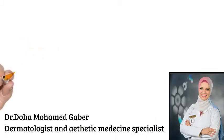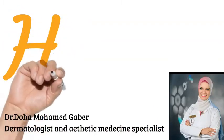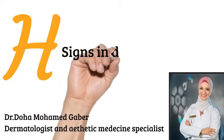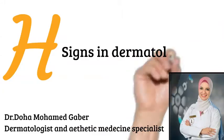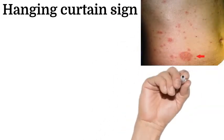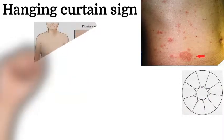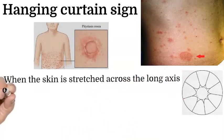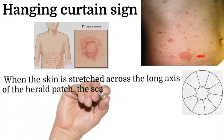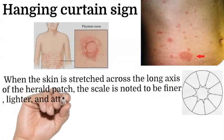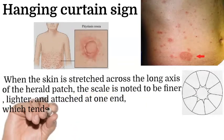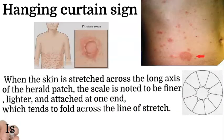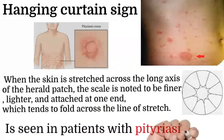I am Dr. Mohamed Geber, dermatologist and aesthetic medicine specialist. Today I will talk about H signs in dermatology. The hanging curtain sign, as seen in this picture of Pityriasis Rosea: when the skin is stretched across the long axis of the herald patch, the scale is noted to be finer, lighter, and attached at one end, which tends to fold across the line of stretch. This is seen in patients with Pityriasis Rosea.